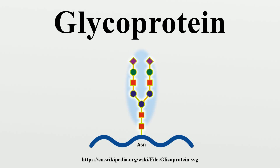In P-glycosylation, sugars are attached to phosphorus on a phosphoserine. In C-glycosylation, sugars are attached directly to carbon, such as in the addition of mannose to tryptophan. In glypiation, a GPI glycolipid is attached to the C-terminus of a polypeptide, serving as a membrane anchor.